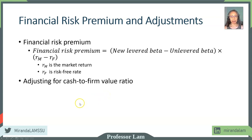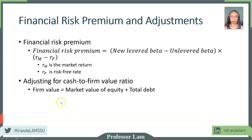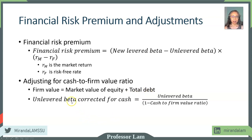Another thing that we may want to take into account is the amount of cash that the company holds. The reason for that is because cash is risk-free — cash doesn't have any risk. So we can adjust the firm value using the cash to firm value ratio. Firm value is defined as market value of equity plus debt, and since debt oftentimes does not have market value, we often use book value. If you take the unlevered beta and correct for cash, you take the unlevered beta divided by one minus the cash to firm value ratio.